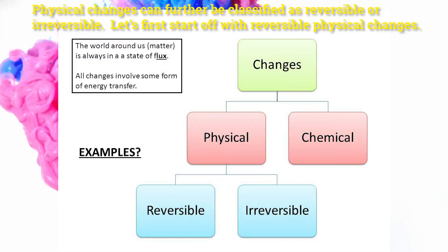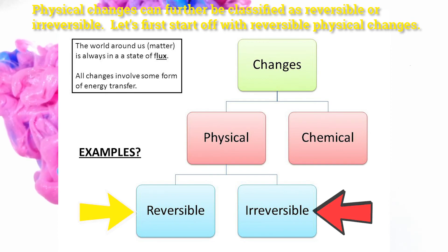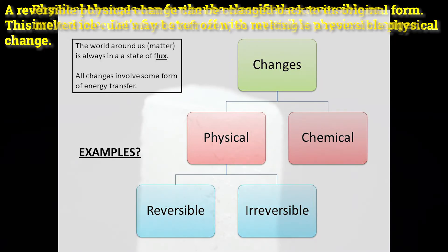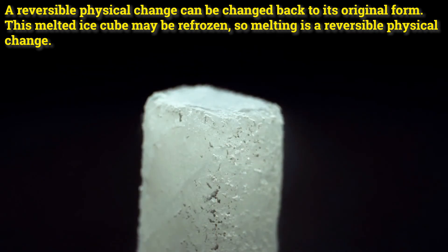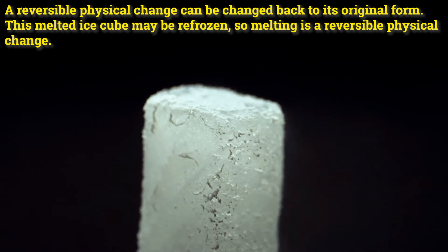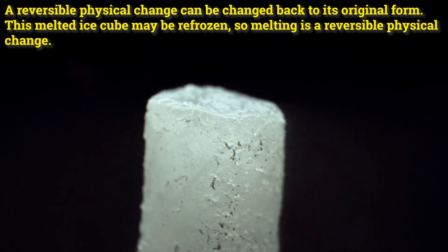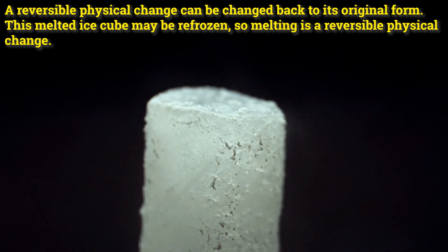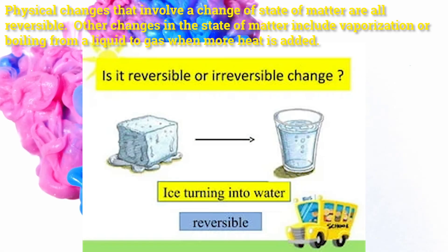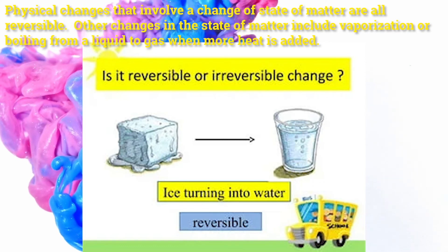Physical changes can further be classified as reversible or irreversible. A reversible physical change can be changed back to its original form. This melted ice cube may be refrozen, so melting is a reversible physical change. Physical changes that involve a change of state of matter are all reversible.